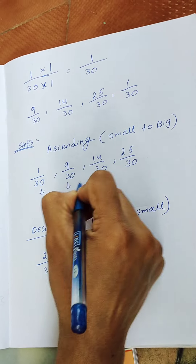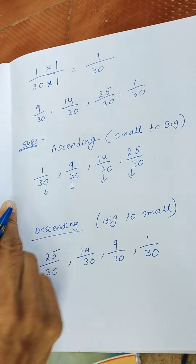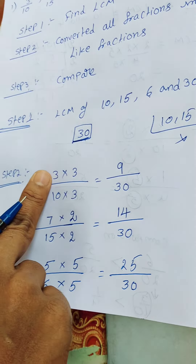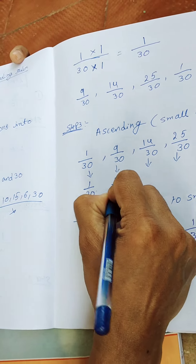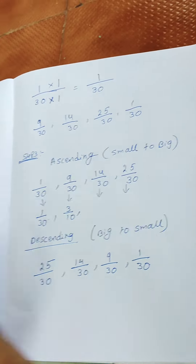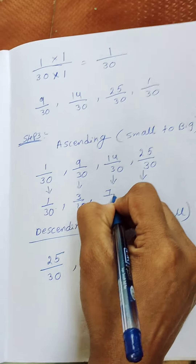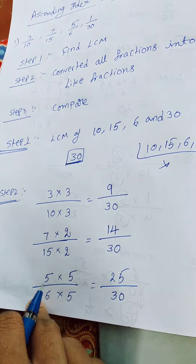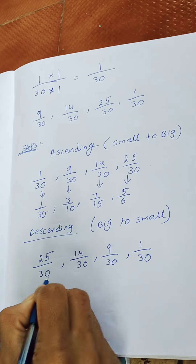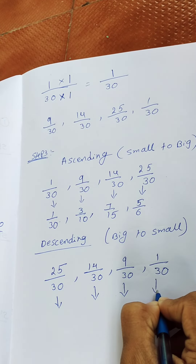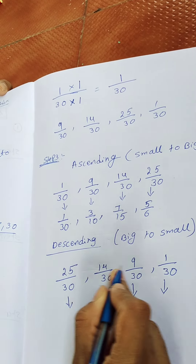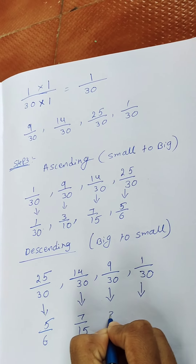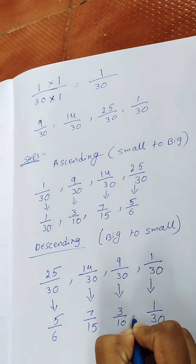After that, we convert these fractions back into the original fractions. 1 by 30 stays as 1 by 30. 9 by 30 is 3 by 10. 14 by 30 is 7 by 15. 25 by 30 is 5 by 6. So in descending order: 5 by 6, 7 by 15, 3 by 10, and 1 by 30.